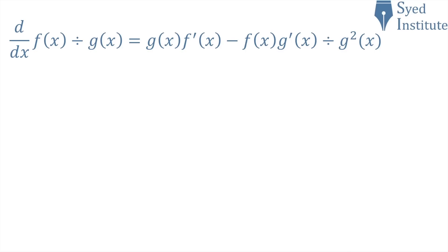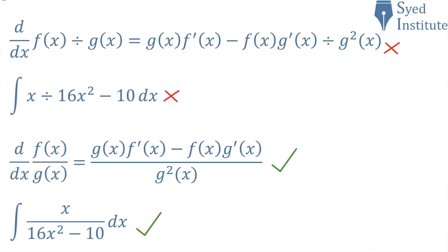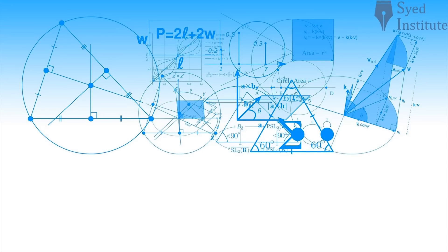This is why we avoid using the division sign in higher-level maths — it causes huge problems and creates massive ambiguity. Calculus students know you will never see the quotient rule for differentiation written using a division sign, nor an indefinite integration problem written that way. It would be absolute madness. There are unambiguous ways to write these expressions, and that's how they are always presented.